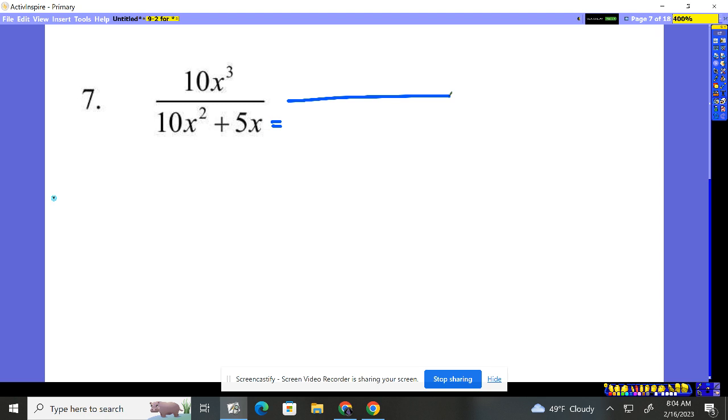What can be factored out of 10x squared plus 5x? Well, number wise, 10 and 5 both have a 5 that can factor out, and they both have x's. So I'm going to factor out a 5x.